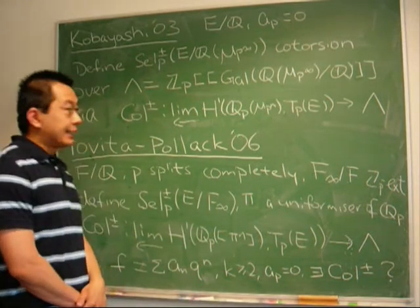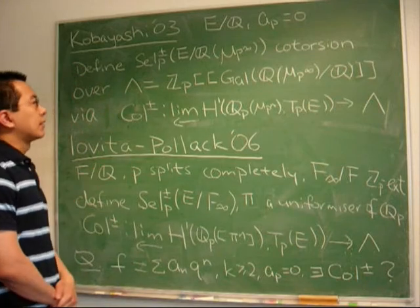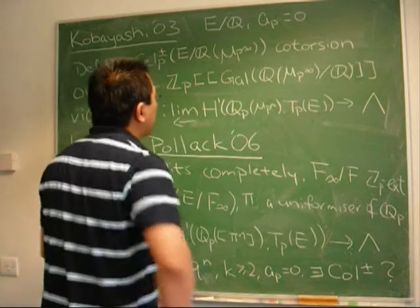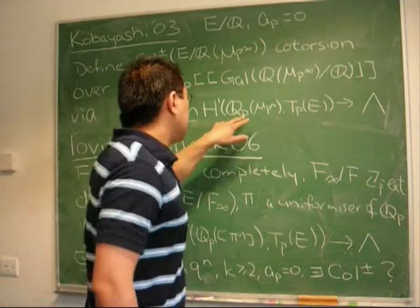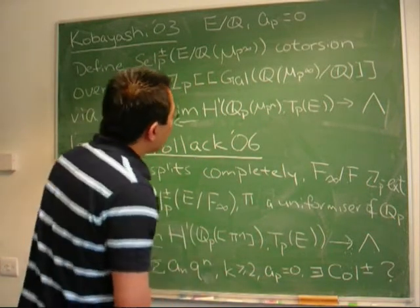And to show that they are indeed lambda quotients he defines these plus and minus Coleman maps which are lambda homomorphisms from the inverse limit of H1 of the Tate module over the extension of QP by the P to the n roots of unity into lambda.